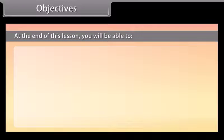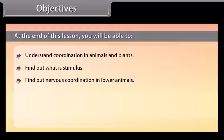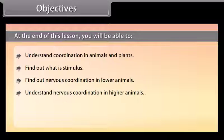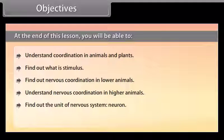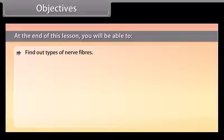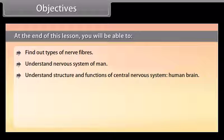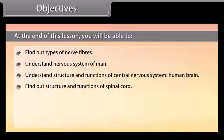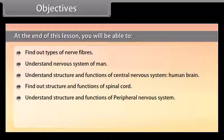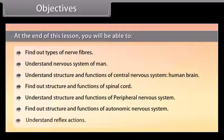Objectives: At the end of this lesson, you will be able to understand coordination in animals and plants, find out what is stimulus, find out nervous coordination in lower animals, understand nervous coordination in higher animals, find out the unit of nervous system, find out types of neurons, types of nerve fibers, understand nervous system of man, understand structure and functions of central nervous system, human brain, spinal cord, peripheral nervous system, autonomic nervous system, and reflex actions.